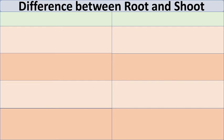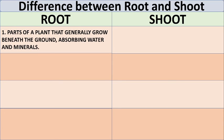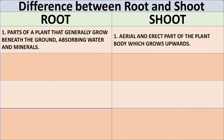Some differences between root and shoot. Parts of a plant that generally grow beneath the ground, absorbing water and minerals, are called root. Shoot is an aerial and erect part of the plant body which grows upwards.